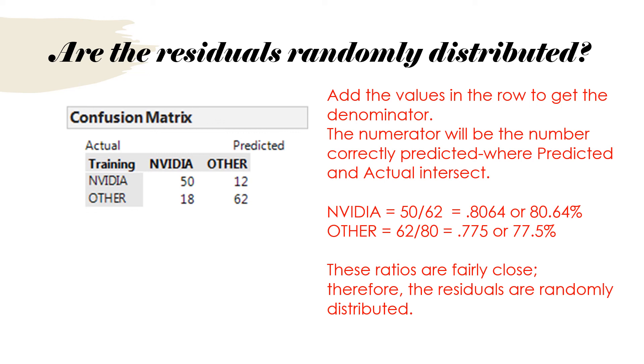Then I do the same thing for the other row. 18 plus 62 gives me a denominator of 80. Then the number predicted that were actually other was 62. So that's your numerator. 62 divided by 80 is .775. These values are fairly close to each other. There's no rule of thumb of what's close and what's distant. So we're going to say that these are randomly distributed residuals.